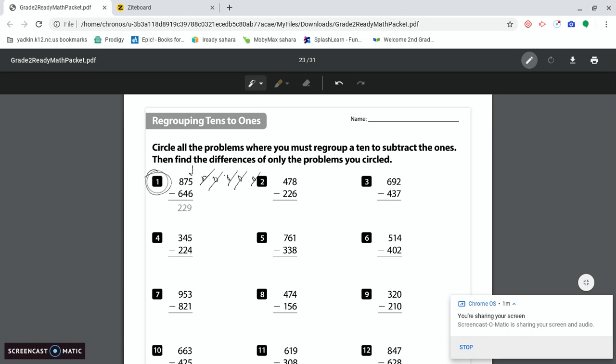Look at number two. We have eight ones. One, two, three, four, five, six, seven, eight. We need to take away six again. One, two, three, four, five, six. We can do that. There are two left over, so we would not need to regroup or circle number two.